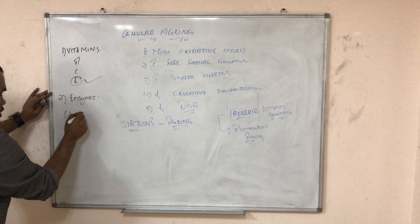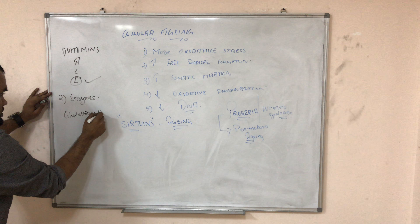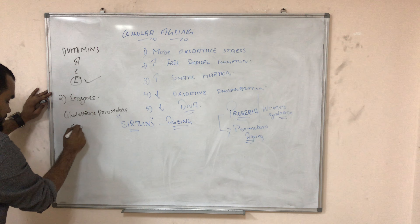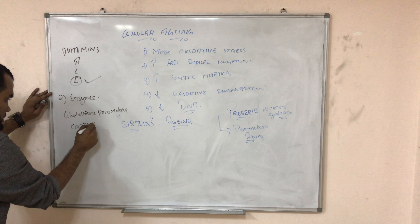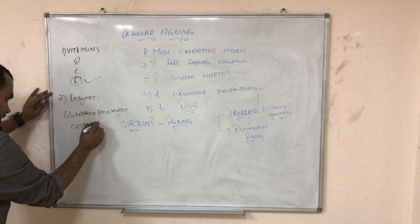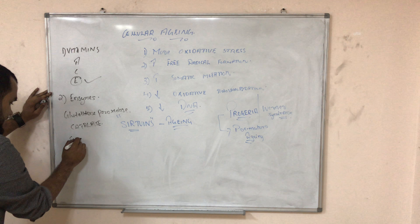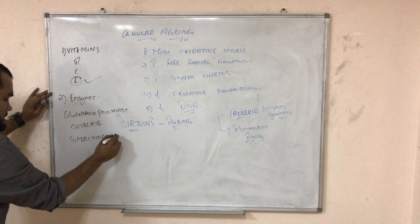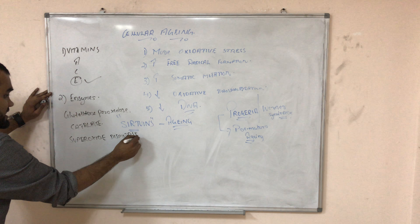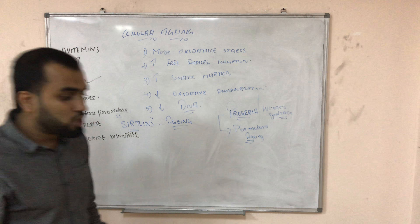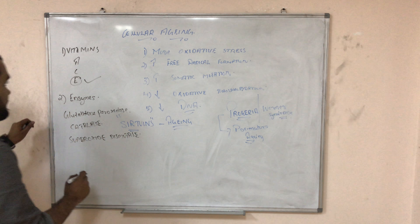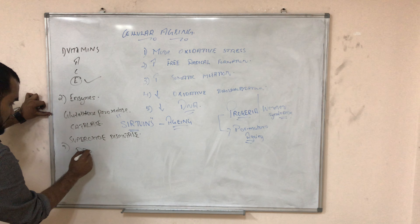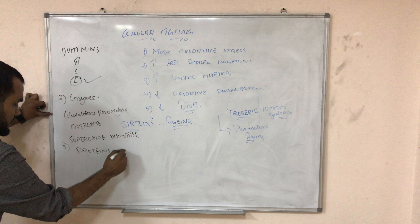We also have antioxidant enzymes from biochemistry: glutathione peroxidase, catalase, and superoxide dismutase. There are also some proteins in our body that act as antioxidants.